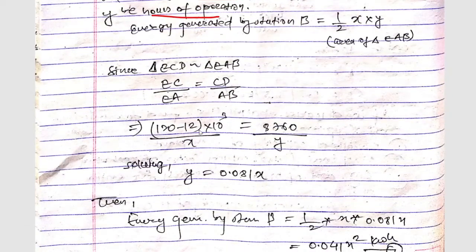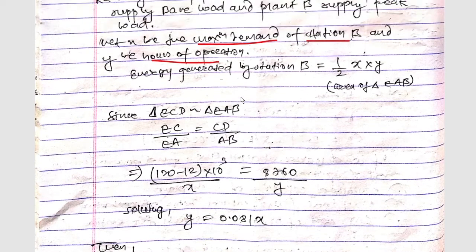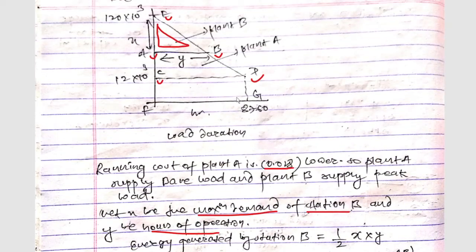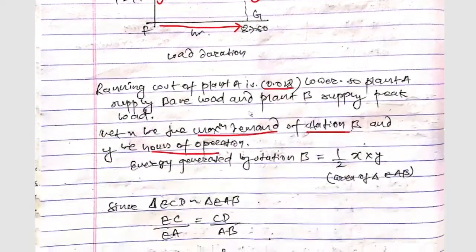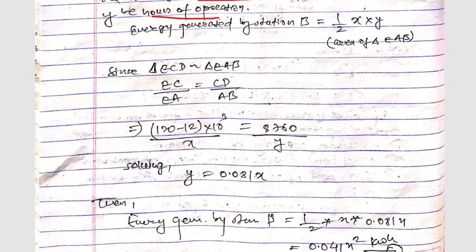EC is (120 − X) × 10³ and EA equals X. CD represents one year of hours, so CD equals 8760 hours, and AB equals Y. Solving the similar triangles ratio gives Y = 0.081 × X.